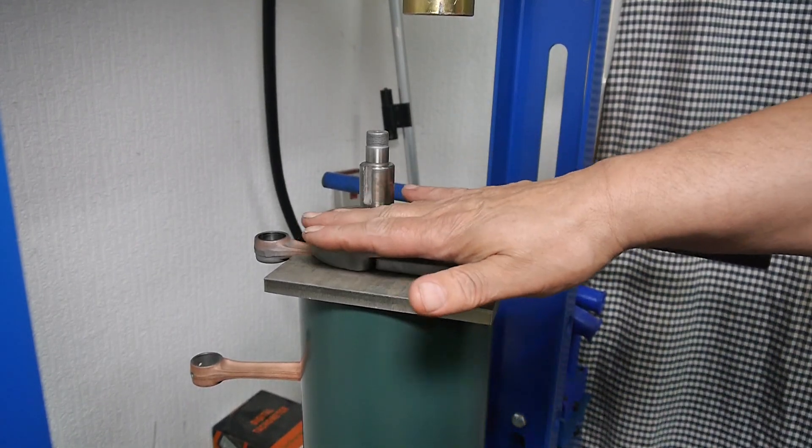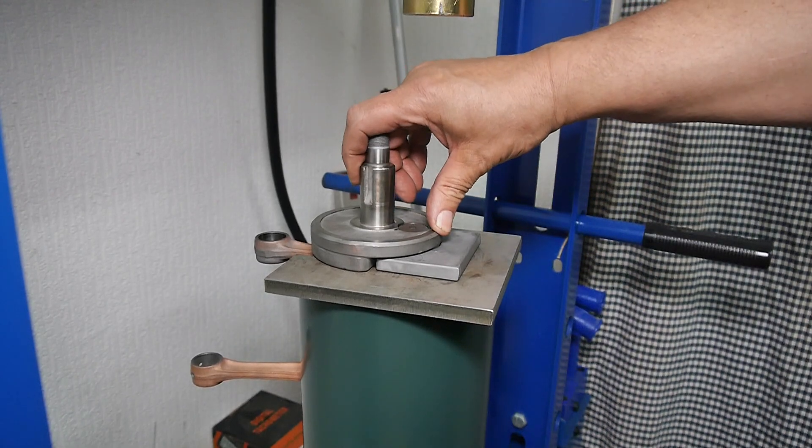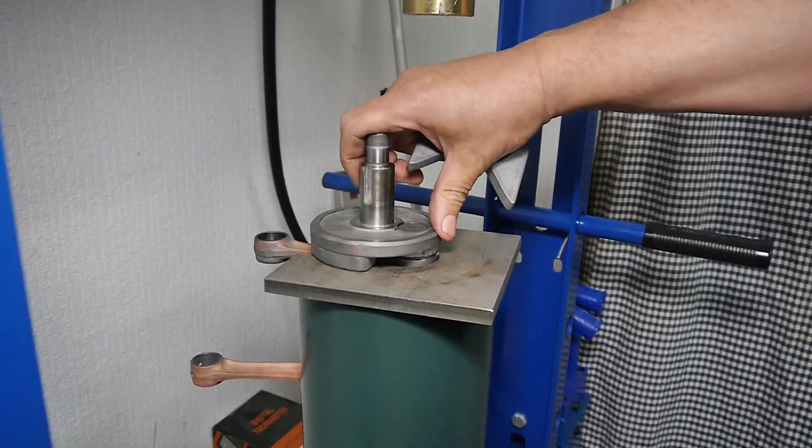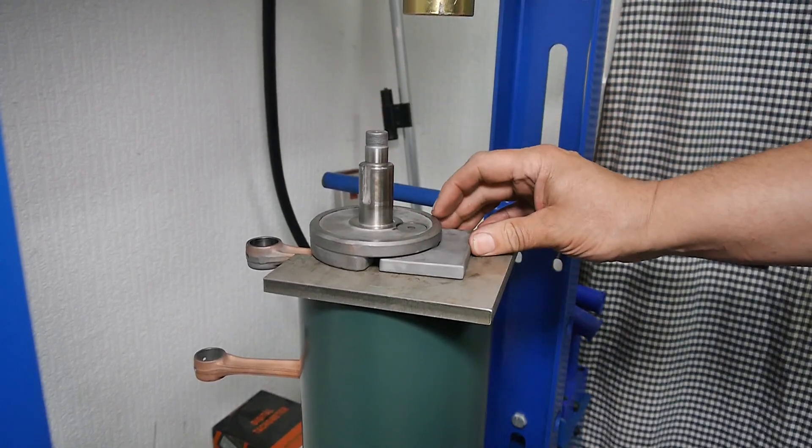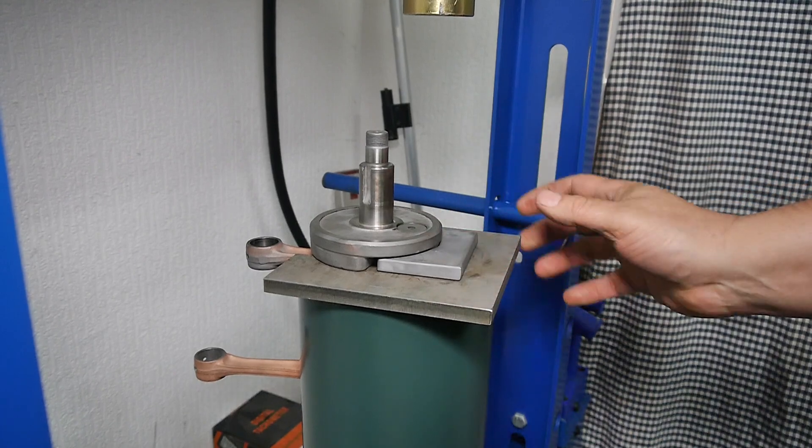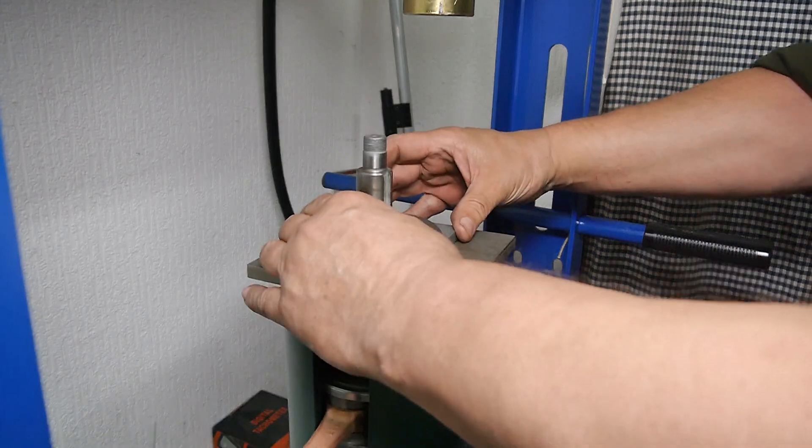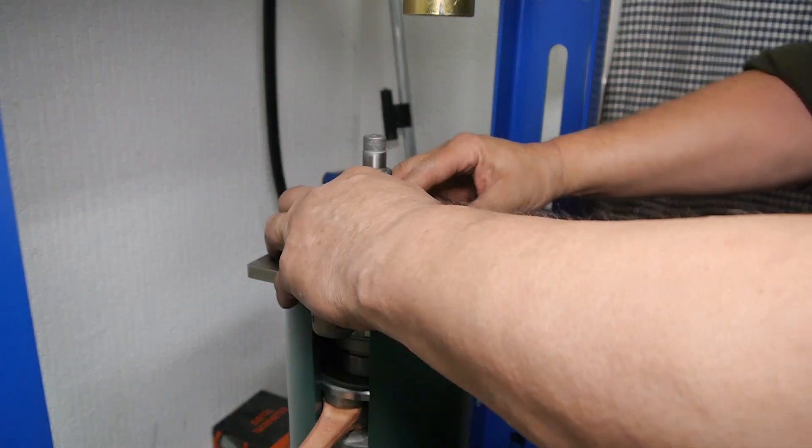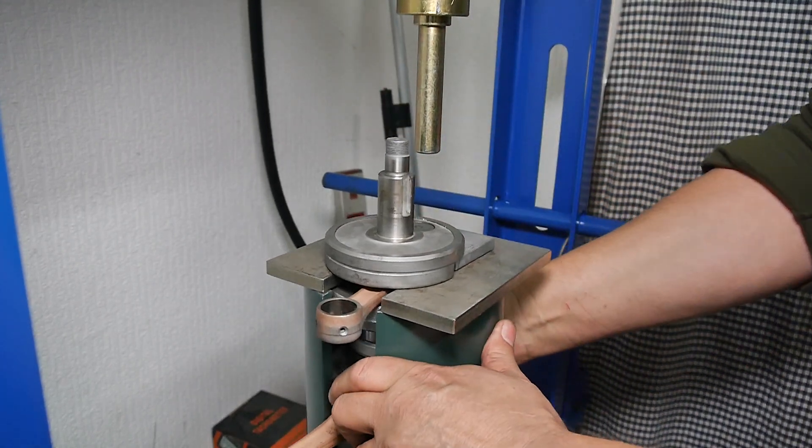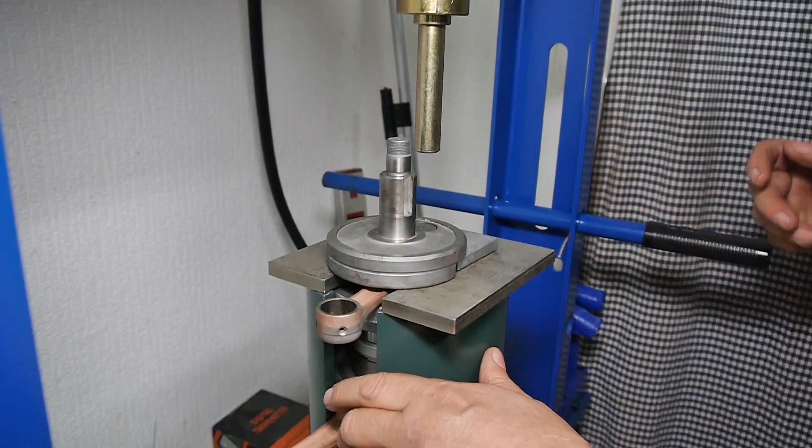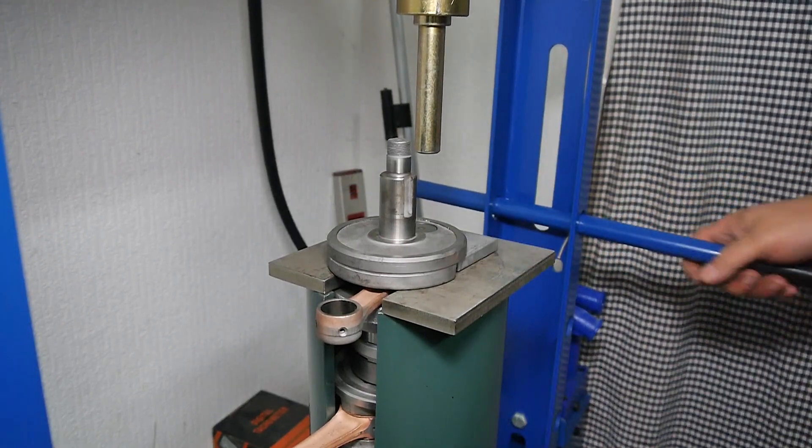And what this does, it stops the pin, once the pin starts to be pressed, it stops the crankshaft from wobbling over, basically like that. It'll wobble over if you don't put that insert in the back there. So that's in and ready to press. So I'll put in my first tool, the pressing pin, which is always smaller than the actual big end pin.